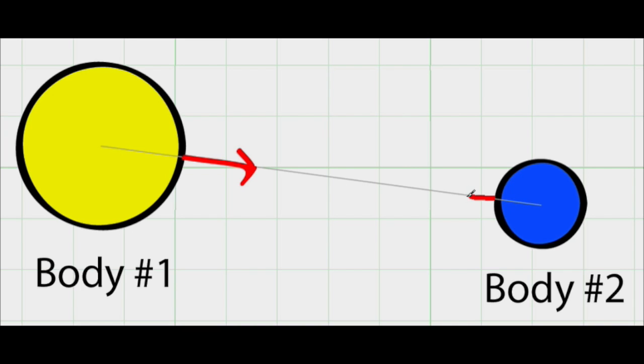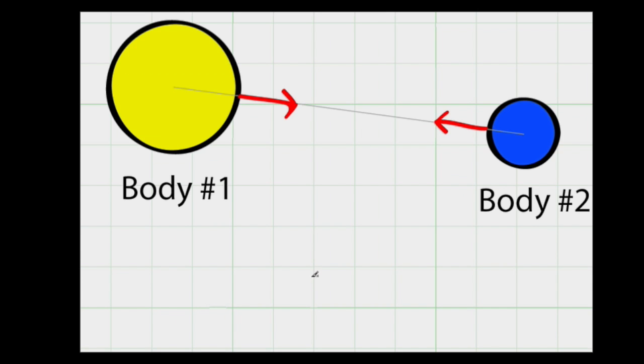Similarly, there's a force on body 2, and this is the pull of body 1 on body 2. This force and this force are exactly the same in magnitude. Newton figured out that the magnitude of this force is given by this equation.